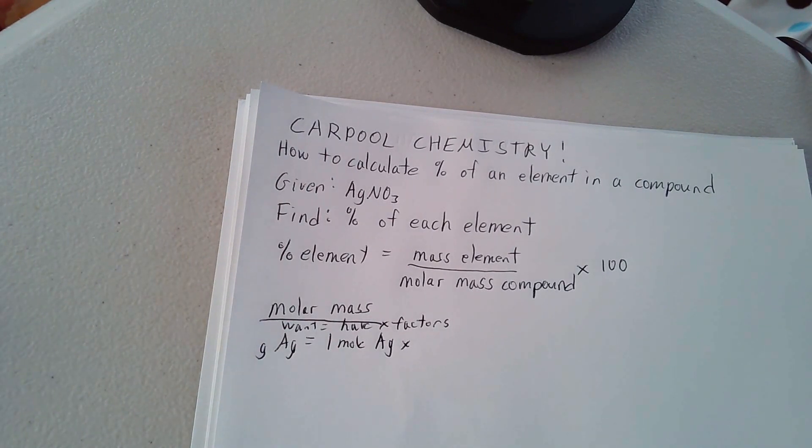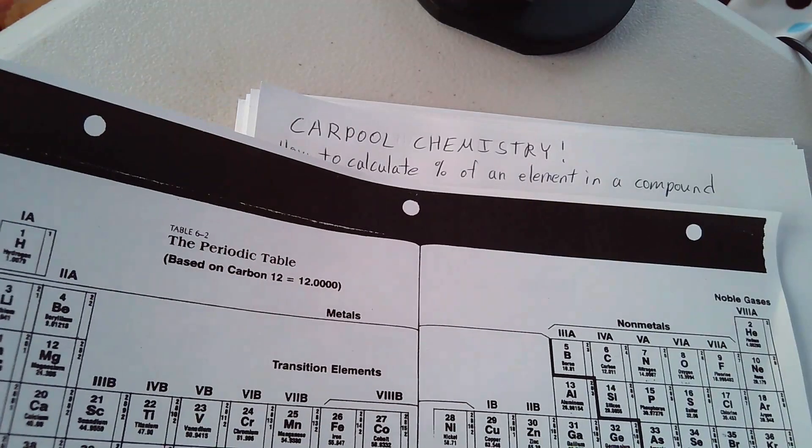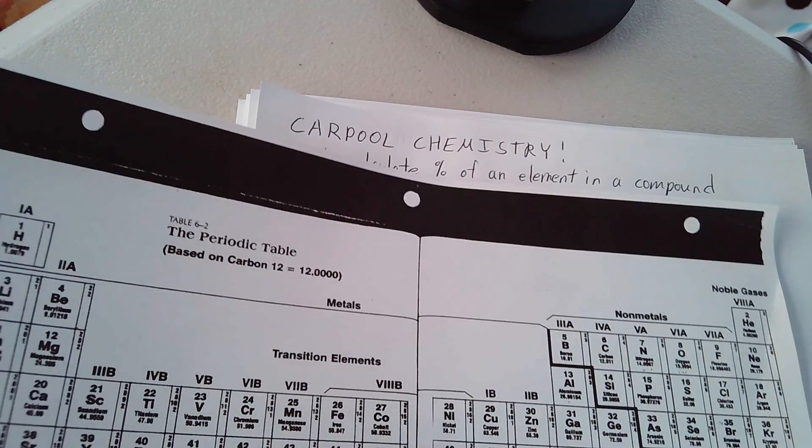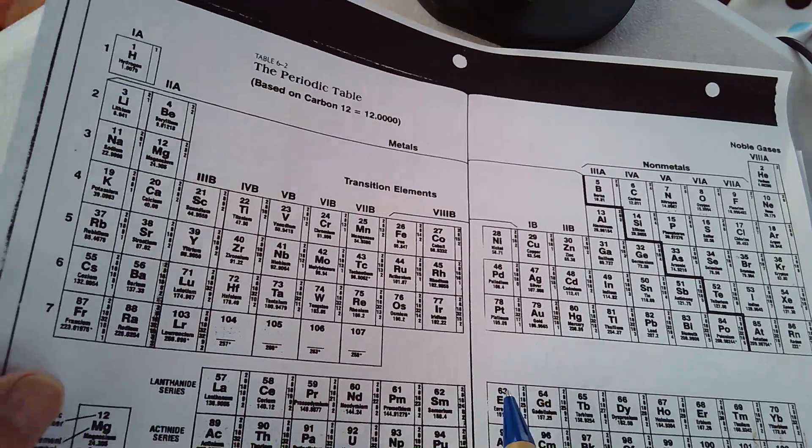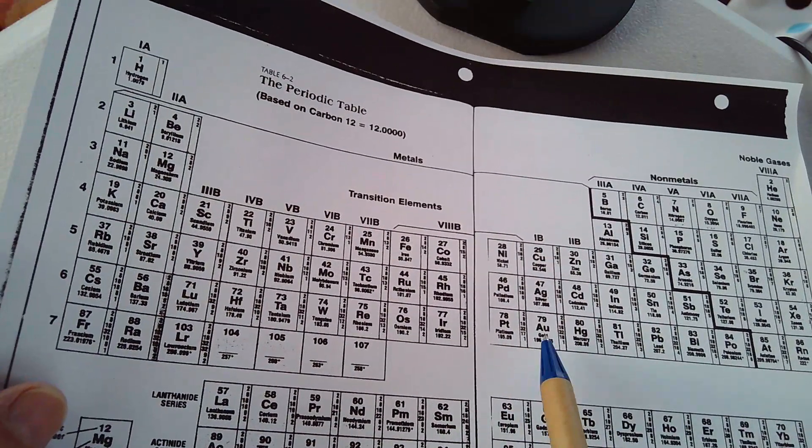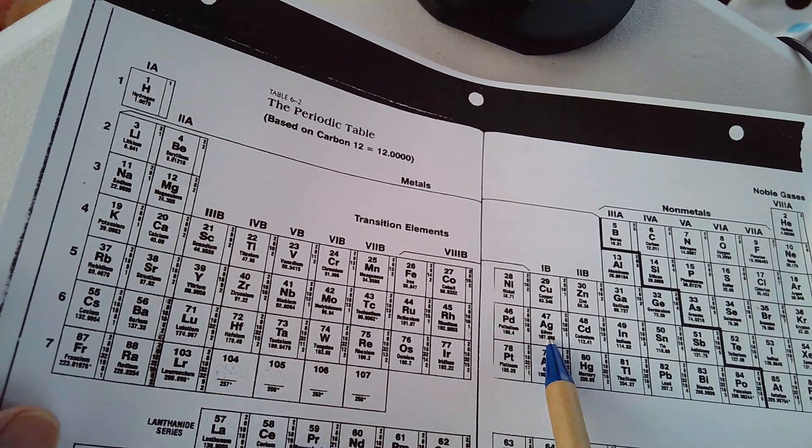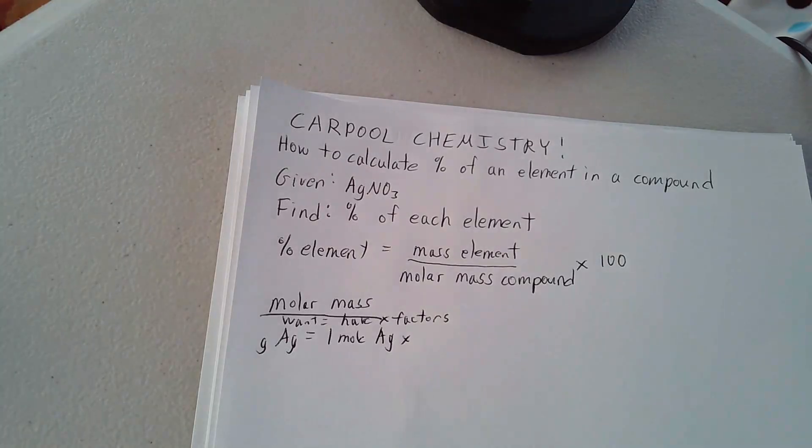And what's the mass of one mole of silver? We look in our handy-dandy periodic table over here, and we see silver's right down over here, right there, clocking in at 107.87 grams per mole.